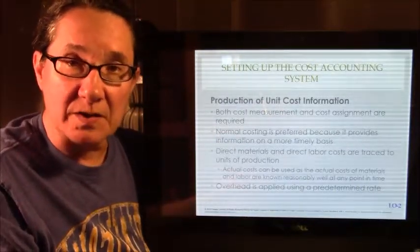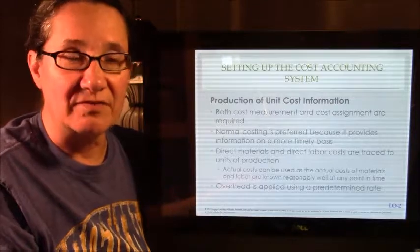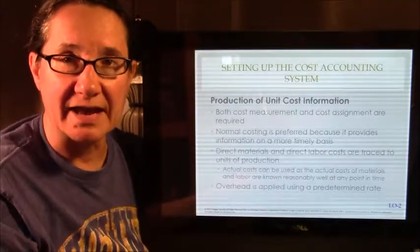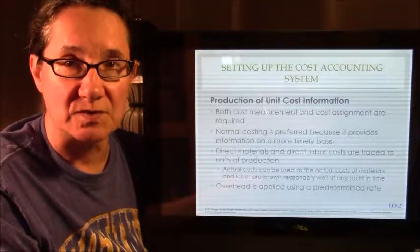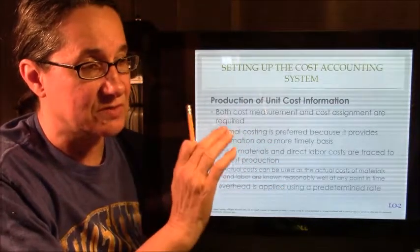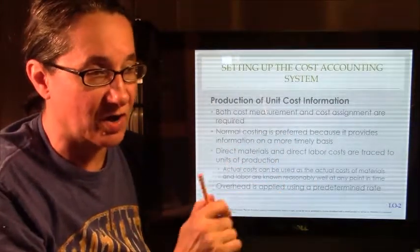Then at the end of the period, if you go, oh yeah, I was a little bit off, then you find your variance and you just fix that, add it or subtract it from cost of goods sold usually. So we need to measure, we need to assign, we like normal costing.